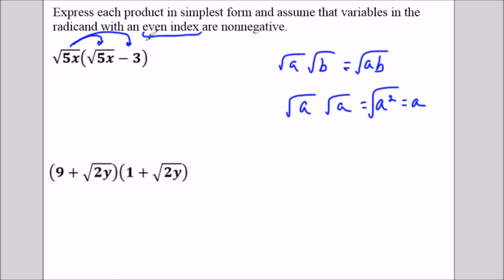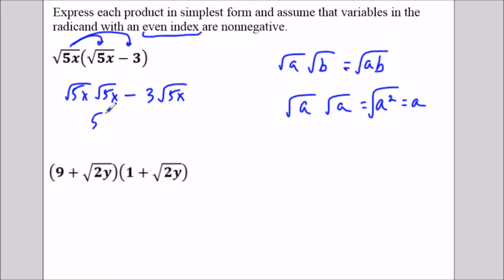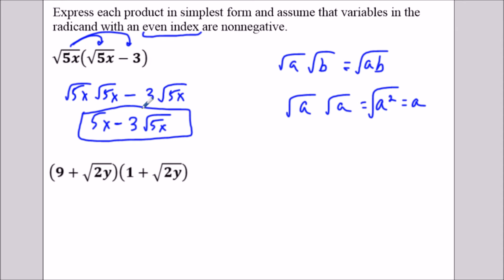So here when we multiply, we've got square root of 5x times the square root of 5x minus 3 times the square root of 5x. Square root of 5x times square root of 5x is just 5x using this property. And then we've got minus 3 times the square root of 5x. This is as simple as it gets — we've got this in simplest form. So for the first question, this is our solution.